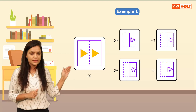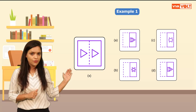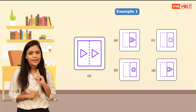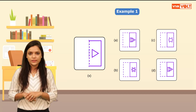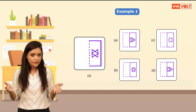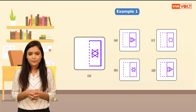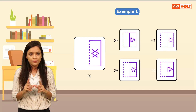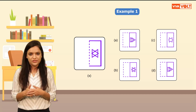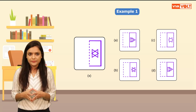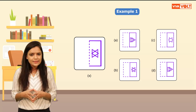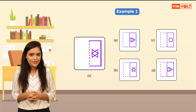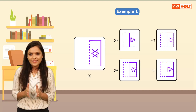Let's fold this paper and see what happens. You can observe that both triangles overlap each other. Is there such a figure in the options? Yes, so the correct answer is option B.